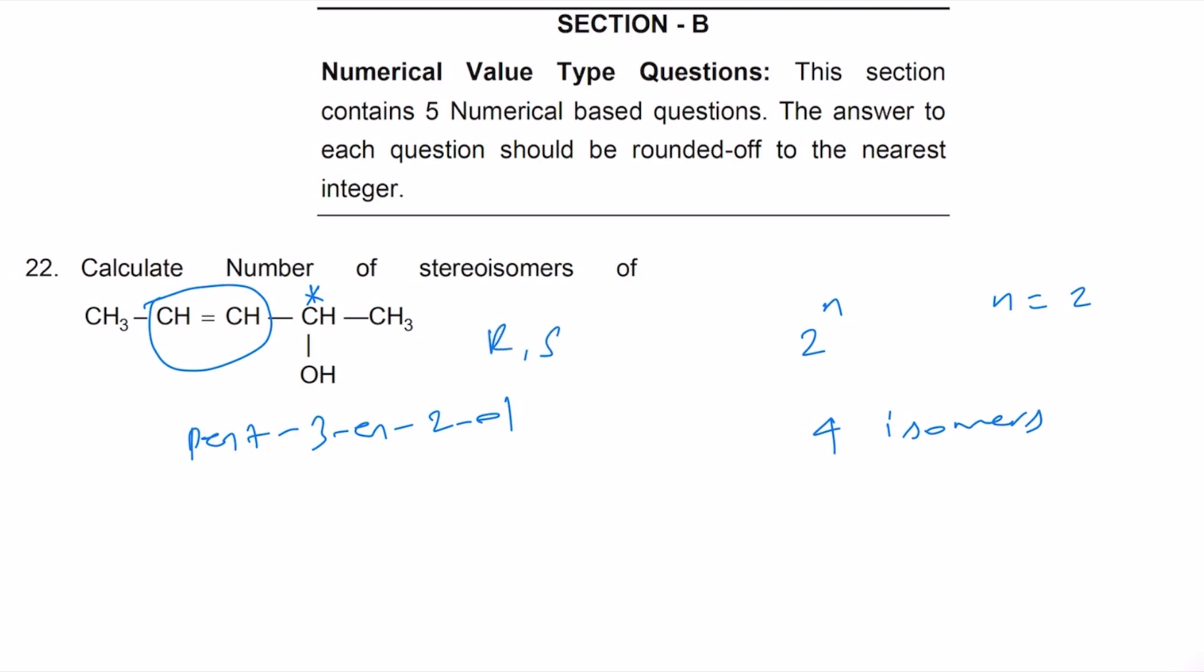You have to consider geometrical isomerism cis and trans also here, or you can call it E and Z. So 3E and 3Z. This 3E will have R and S, and this 3Z also will have R and S, and that is why it is 4.